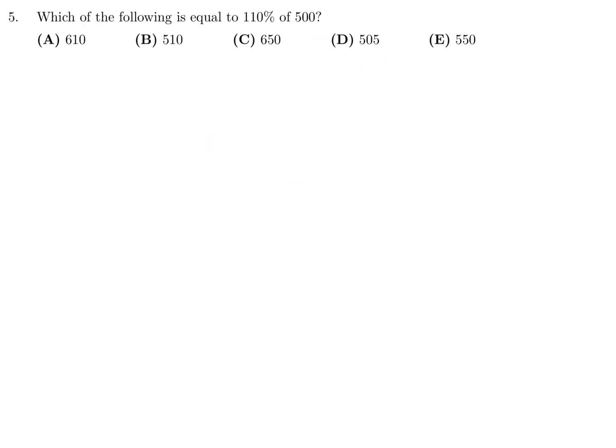Which of the following is equal to 110% of 500? 110% is written as 1.10, and then you multiply that by 500, and you will get 550. Number 5, the answer is E.